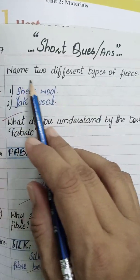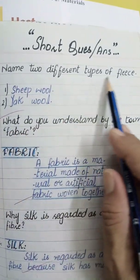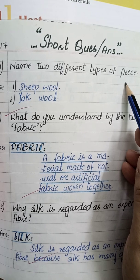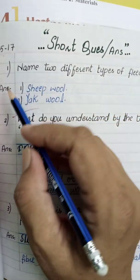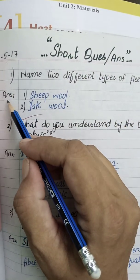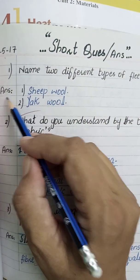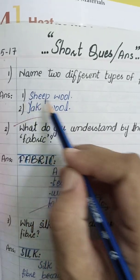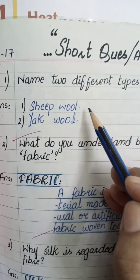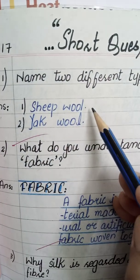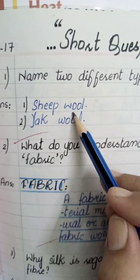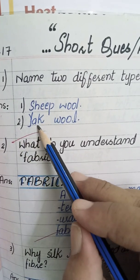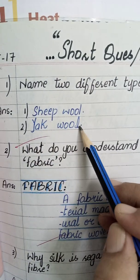Question number 1: Name two different types of fleeces. The answer is: number 1 — sheep wool, number 2 — yak wool.